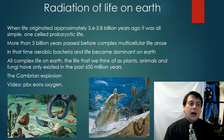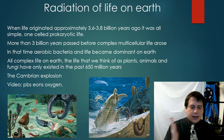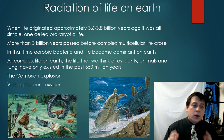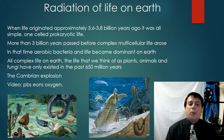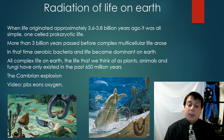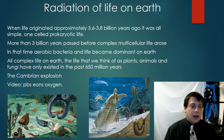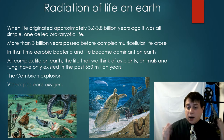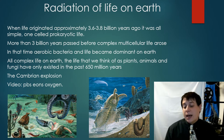Life originated about 3.7 billion years ago — there's some argument as to the exact date; when you're talking about billions of years, it's close enough. More than 3 billion years passed before complex multicellular life arose. In that time, aerobic and anaerobic bacteria became the dominant life on Earth. All complex life — plants, animals, fungi — has really only existed for the past 650 million years. This is where you get the radiation and adaptation of life on Earth, including the Cambrian explosion.